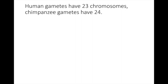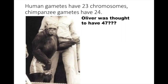Chimpanzees, our closest relatives, have 48 chromosomes. Therefore their gametes have 24 — you take 48, divide by half, and get 24. This is Oliver the chimpanzee, who I mentioned during class. If you had a human gamete meeting another human gamete, you'd have 23 plus 23, which is 46 — that's what you get in a normal human. A chimpanzee gamete would be 24 with another chimpanzee gamete, so a chimpanzee sperm with a chimpanzee egg would make 48, which is what chimpanzees normally have.